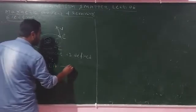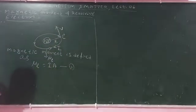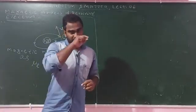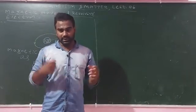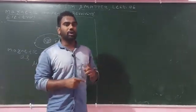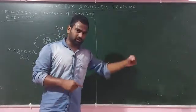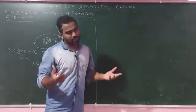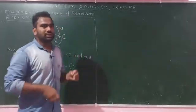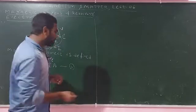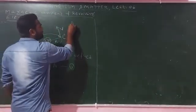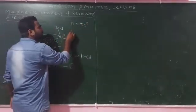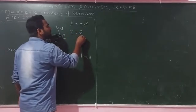The most important part is the circular path. We have a current flowing through a circular path. The current I is given by Q divided by T, where T is the time period.